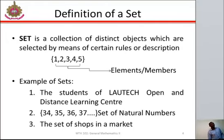When you collect items of similar characteristics or functions together, you could say that you have a set of such items. For example, you can have a set of books, a set of furniture, a set of dissecting instruments, and so on. A set can be defined as a collection of distinct objects which are selected by means of a certain rule or description. It is a mathematical concept used to describe a list, collection, or class of objects.